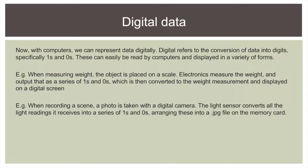Moving to digital — with computers we can represent data digitally. Digital refers to the conversion of data into digits, specifically ones and zeros. It's a way to quantify something that was not quantifiable before. By converting it to ones and zeros, it can be easily read by computers and displayed in a variety of forms.